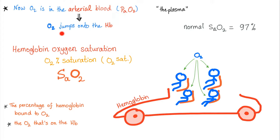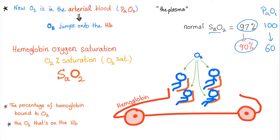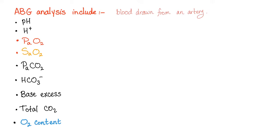Oxygen in the arterial blood jumps on the hemoglobin — called saturation, or percent saturation of oxygen, or SaO2. Normally this is 97%. If it's 96% I'm not going to panic, but if it decreases to 90%, that's bad news. Because as the saturation decreases from 97% to 90%, the PaO2 has decreased from 100 to 60 mmHg, which is not good. That's why the oxygen-hemoglobin dissociation curve has an S-shape — because a small change in saturation is equivalent to a huge reduction in PaO2.